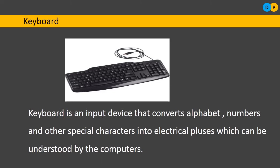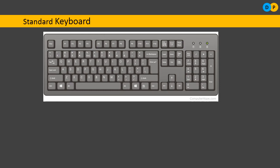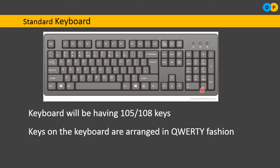A standard keyboard has around 105 to 108 keys. As you can notice on the keyboard, there are many different types of keys: starting from Escape, F1, F2, and so on, along with number keys, special symbol keys, Alt key, Tab key, Enter key, Space Bar, and a dedicated numeric keypad on the right side for faster calculations. There are also arrow keys, Page Up and Page Down keys.